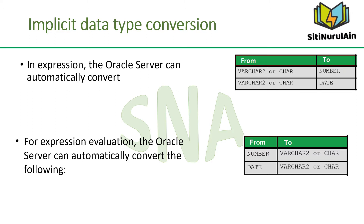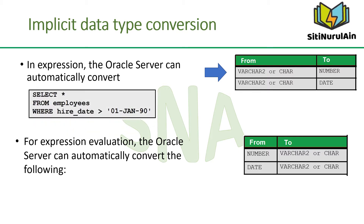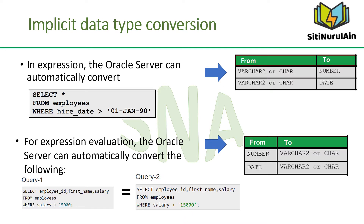In an expression, the Oracle server can automatically convert a VARCHAR2 or CHAR value to a NUMBER or DATE type value. For example, the expression HIRE_DATE greater than '01-JAN-90' results in the implicit conversion from the string to date. Similarly, a NUMBER or DATE type value can be automatically converted to character data by the Oracle server. Note that implicit conversion happens only when the character represents a valid number or date type value. For example, both queries give the same result because Oracle internally treats 15000 and '15000' with single quotation marks as the same.